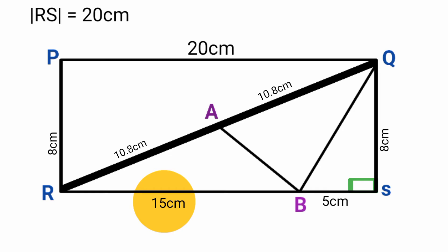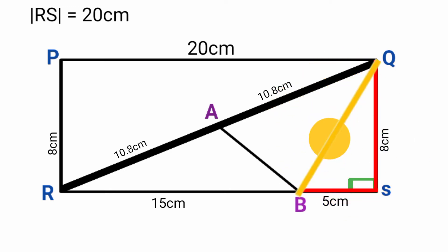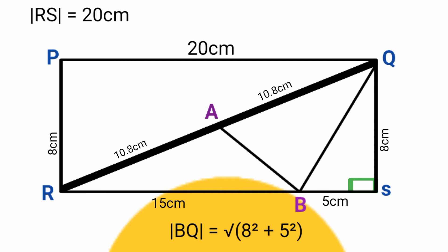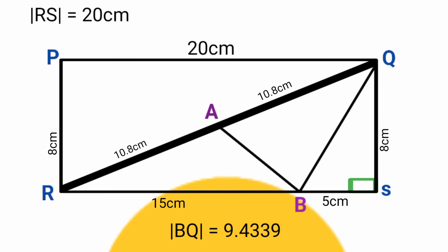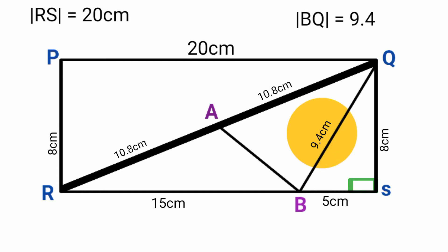Coming back to line BQ, we use the Pythagorean theorem on the right angle triangle. Line BQ is the hypotenuse because it faces the right angle. So BQ squared equals 8 squared plus 5 squared. 8 squared is 64 and 5 squared is 25, giving 64 plus 25 equals 89. The square root of 89 is approximately 9.4. So line BQ equals 9.4 centimeters.